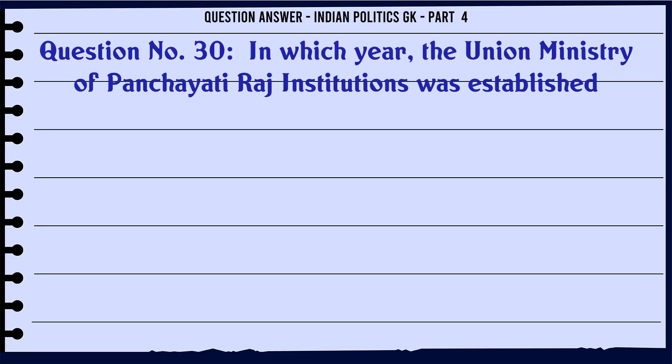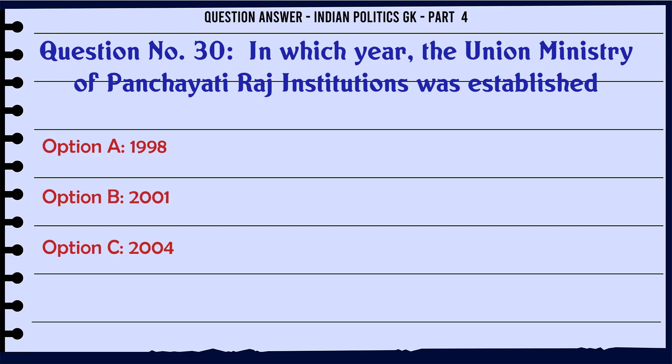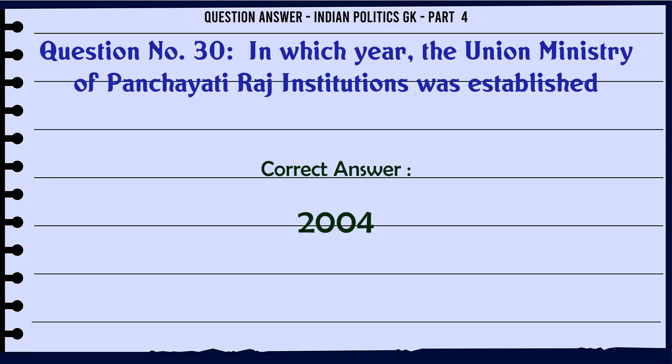In which year was the Union Ministry of Panchayati Raj Institutions established? A. 1998. B. 2001. C. 2004. D. 2006. The correct answer is 2004.